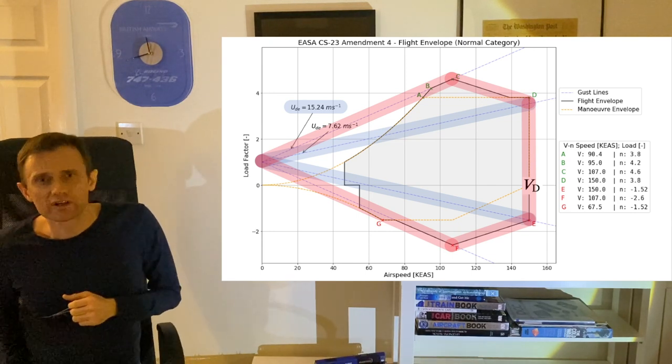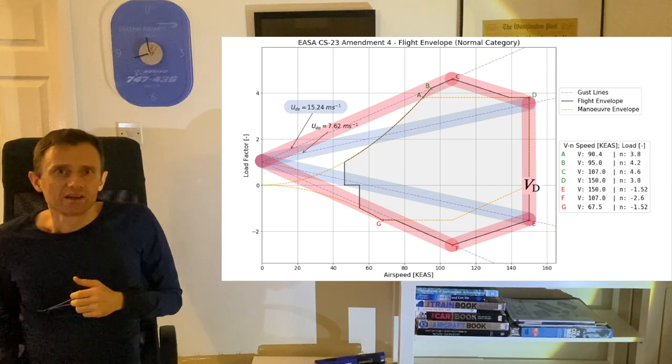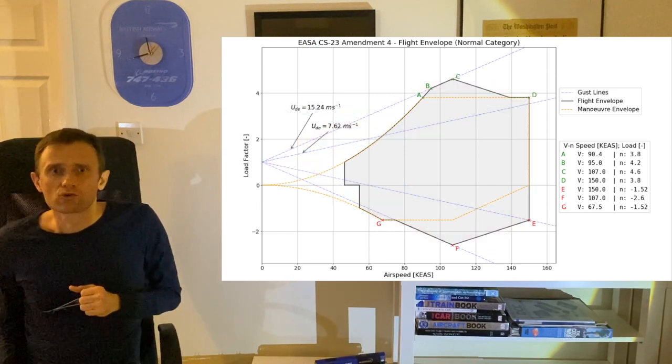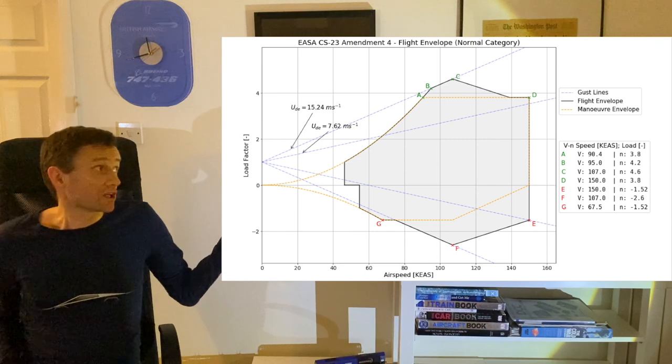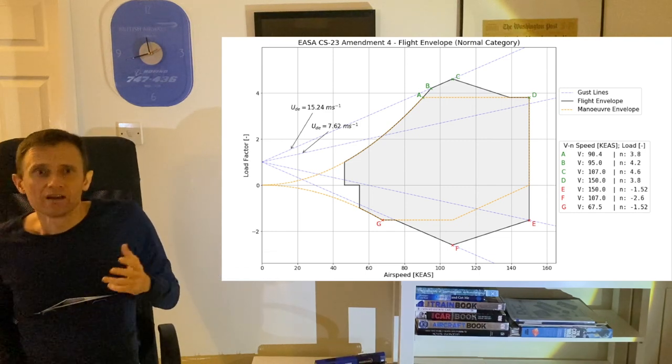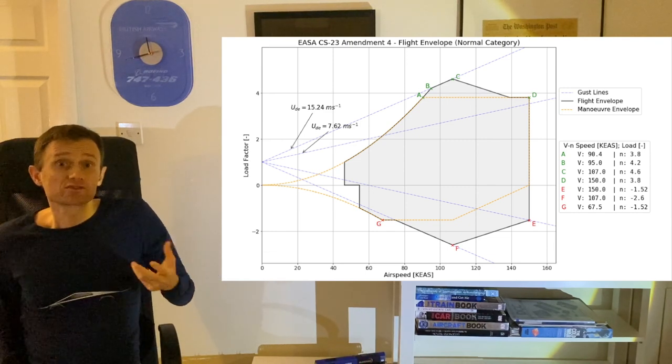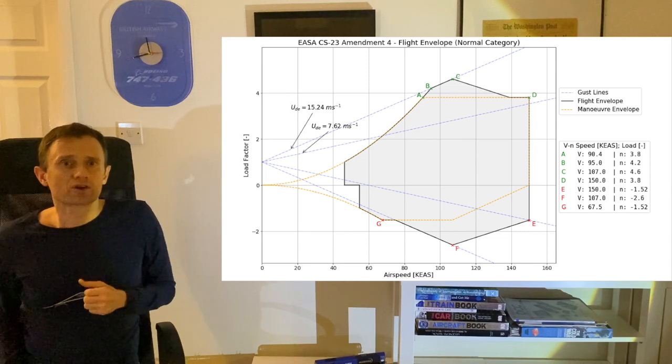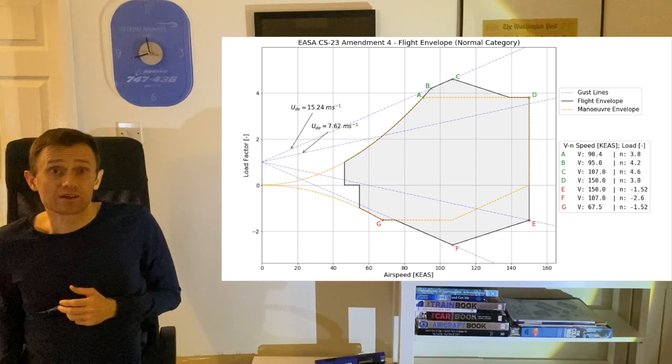With all the key constraints and landmark points in place, the complete flight envelope can be drawn up, shown as the shaded area here. This is done by taking the more conservative of the maneuver and gust envelopes at each point in VN space.